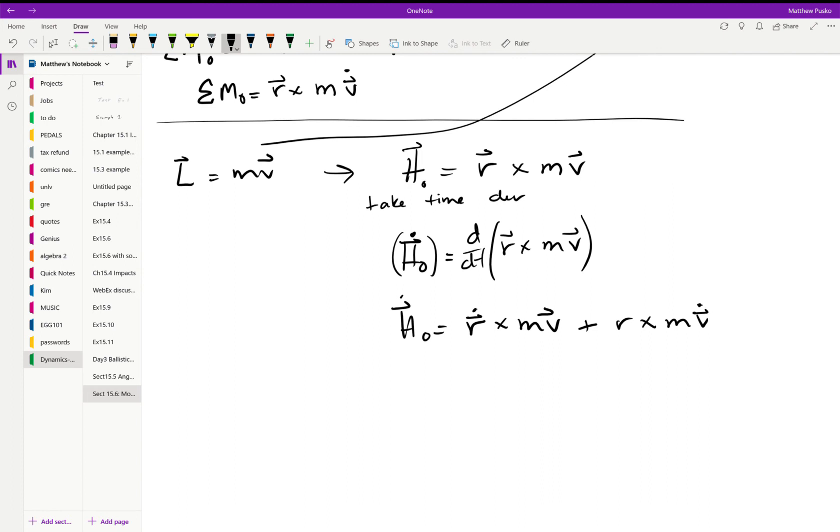Okay, well, if you remember, whenever you cross something into itself you get zero. That's velocity - r-dot equals velocity. That's velocity too. So this whole term right here goes to zero, and we're just left with Ḣ_o is equal to r crossed mv̇.